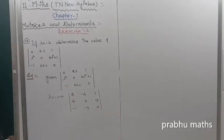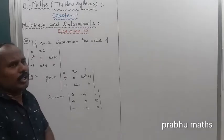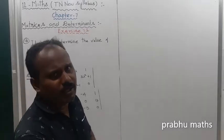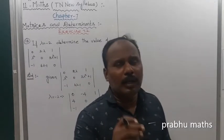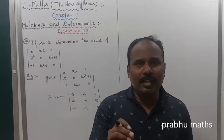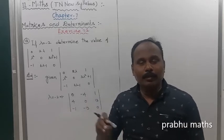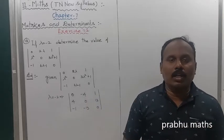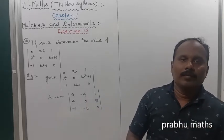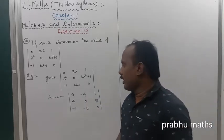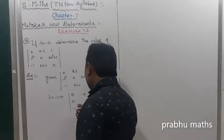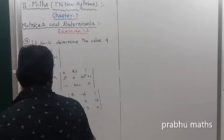So the given matrix is going to be a skew matrix. Why? Because the main diagonal should be fully 0 — that matrix is called a skew matrix. So that matrix is called a skew matrix.